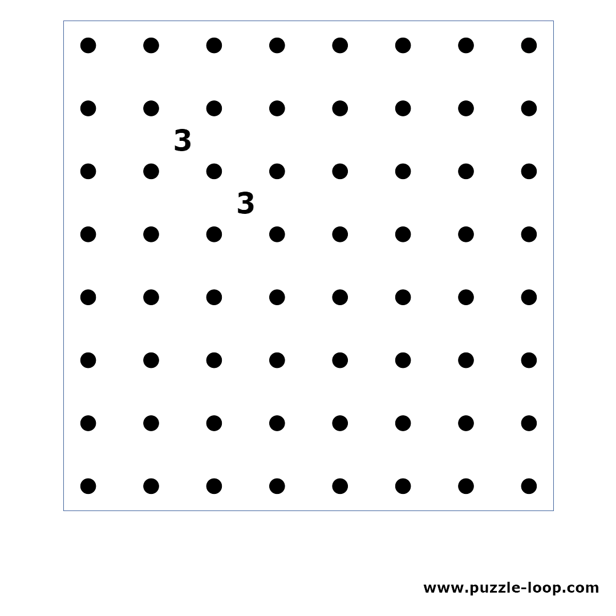When we have two 3s diagonally next to each other, we can place lines on their far end sides. If one of these sides is an X, it will cause a contradiction to the other 3.